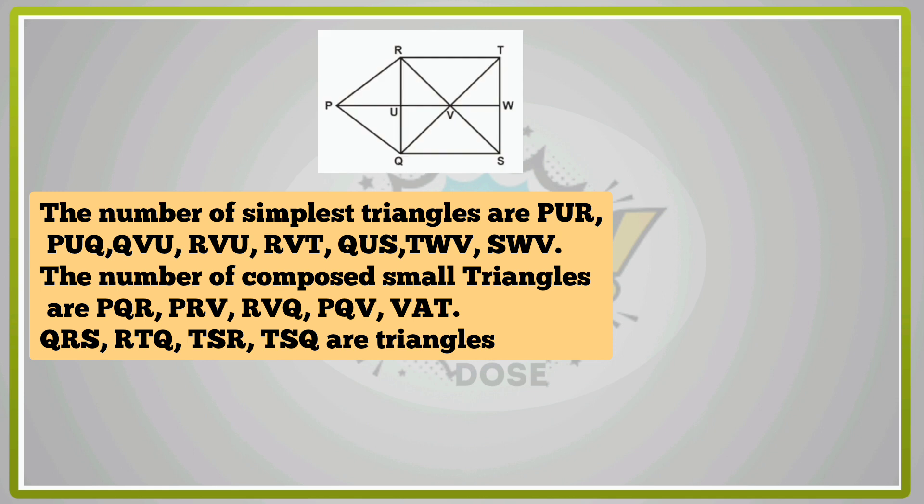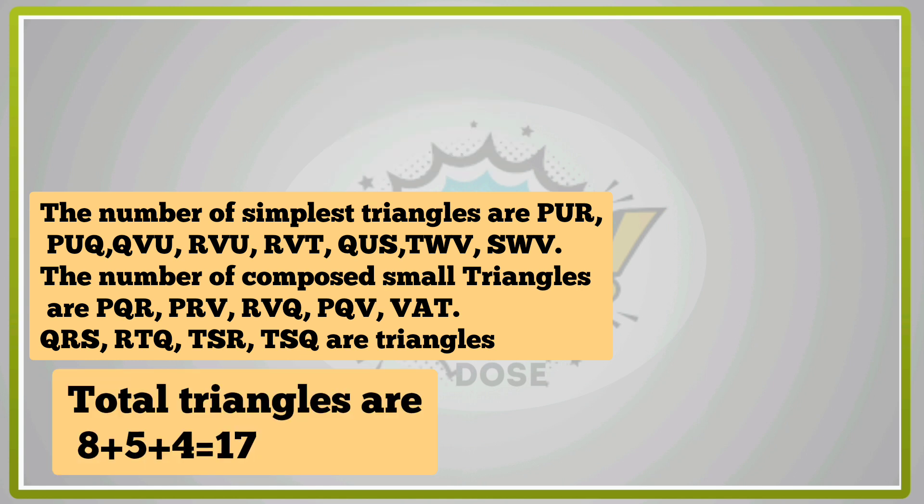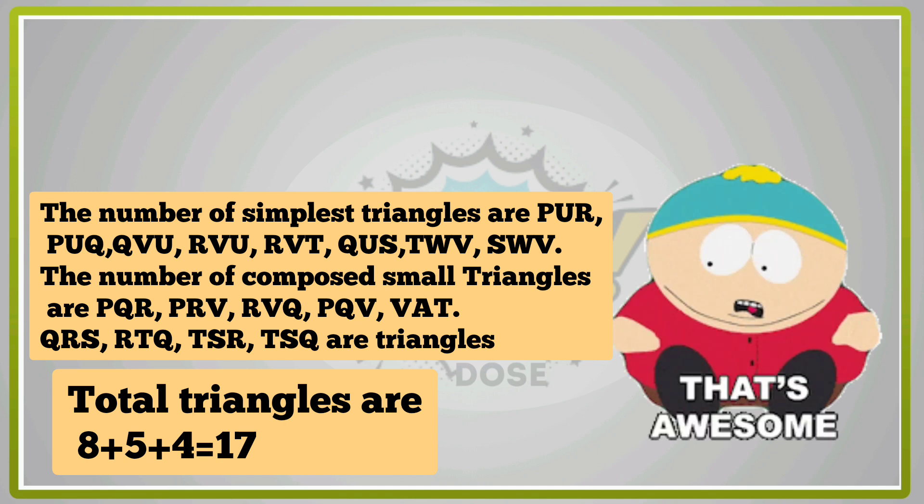The number of simplest triangles are PUR, PUQ, QVU, RVU, RVT, QUS, TWV, SWV. The number of composite small triangles are PQR, PRV, RVU, PQV, VAT, QRS, RTQ, TSR, TSQ are triangles. Total triangles are 8 plus 5 plus 4 equals to 17.